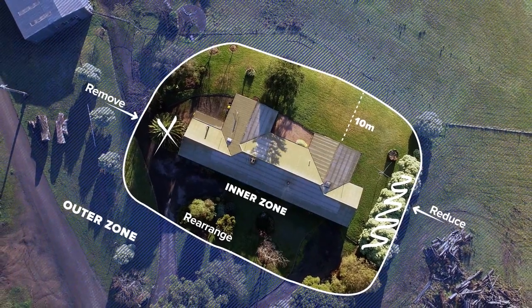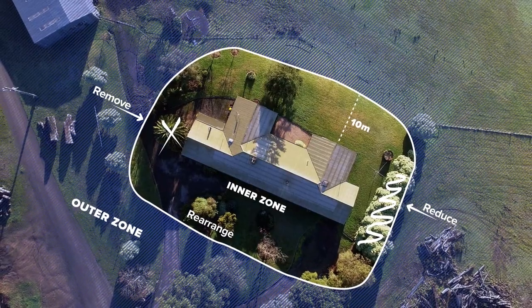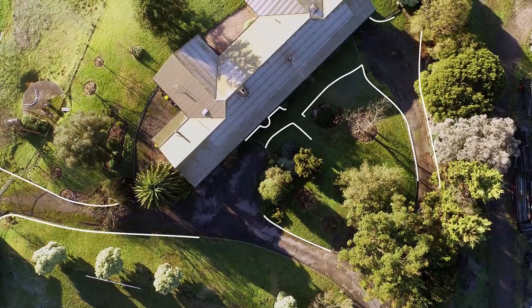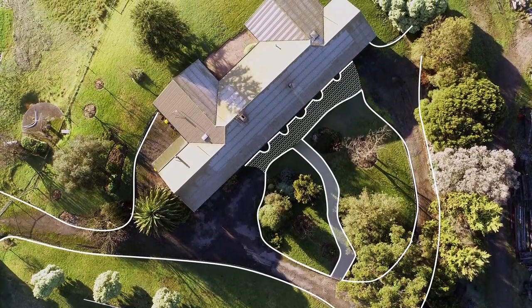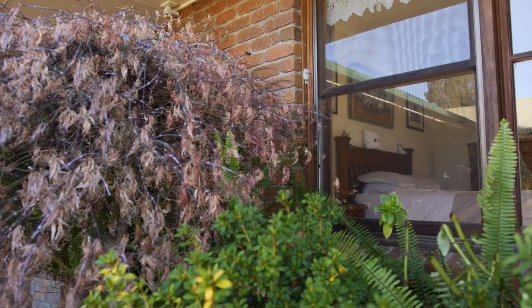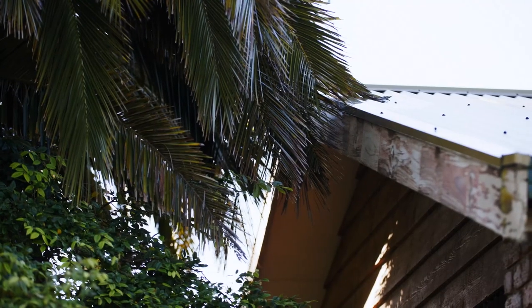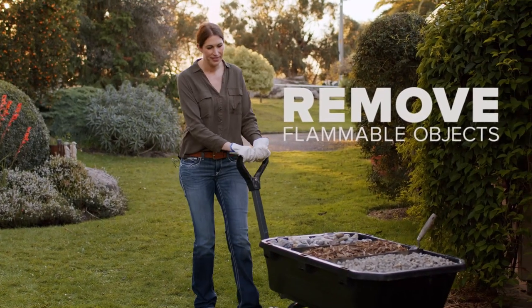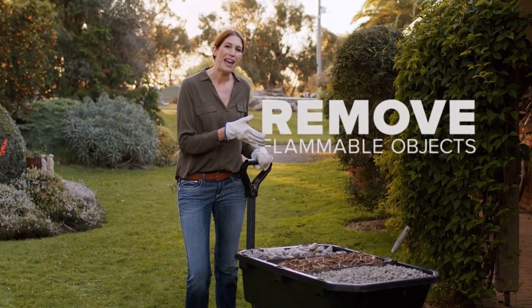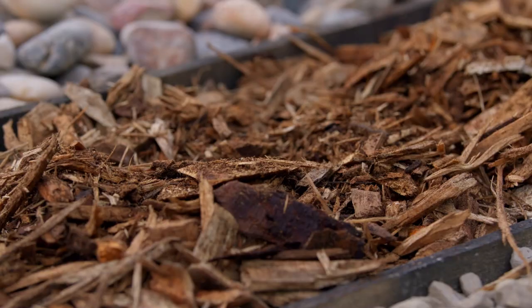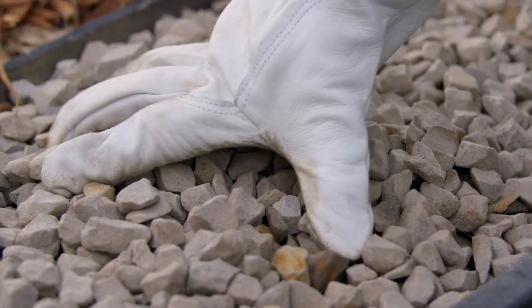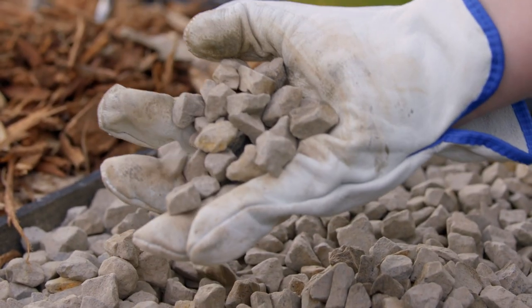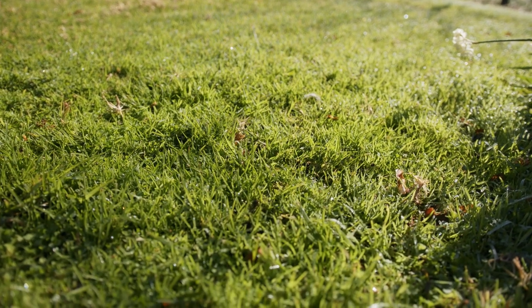You should also have an outer zone where vegetation is managed to a more moderate level. Use driveways and paths to create separation between vegetation and the house. Trees and vegetation should not be located close to vulnerable parts of the building such as windows, decks and eaves. Concrete or paving up to the edge of the house, or replace flammable mulches such as bark with inorganic alternatives such as river pebbles or gravel. Keep grass cut to 5cm within the inner zone and 10cm within the outer zone.